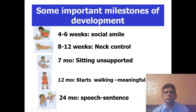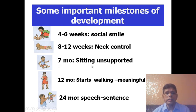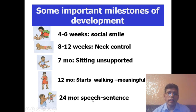Some important milestones of development: at four to six weeks, the child starts giving a social smile — smiling responsively while looking at the mother. At three months, head control. At seven months, sitting unsupported. At one year, starts walking and also says meaningful words. At 24 months, can tell a sentence of at least two words.